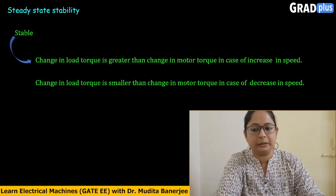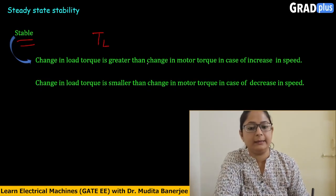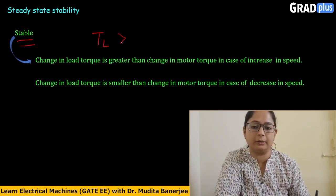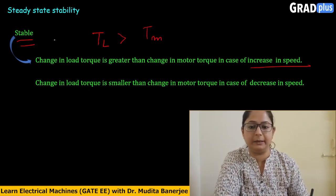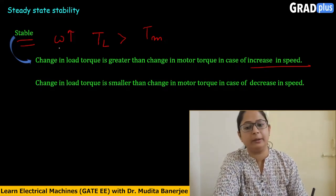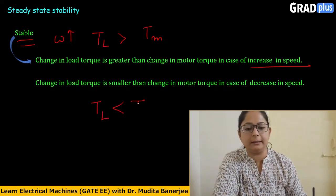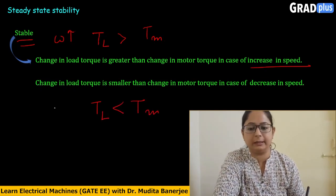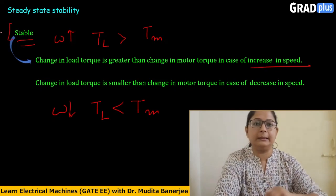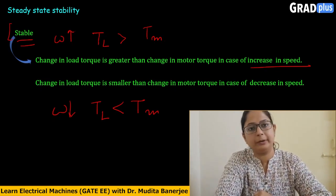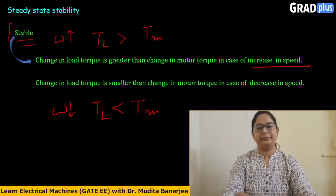To conclude: a stable point is when the change in load torque TL is greater than the change in motor torque TM in case of speed increase, and when the change in TL is smaller than the change in TM in case of speed decrease. When both these conditions hold, the system is stable. Hope you understood the steady state stability of an induction motor. Thank you.